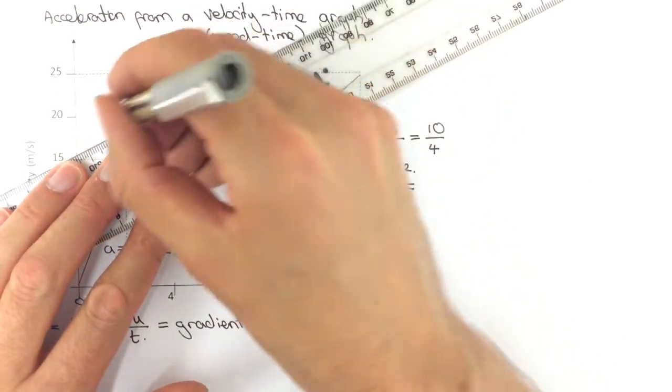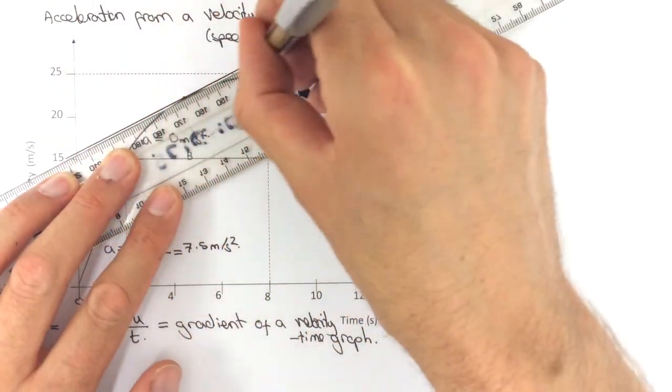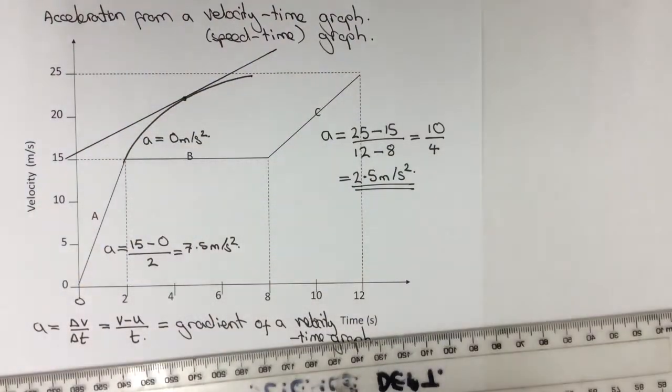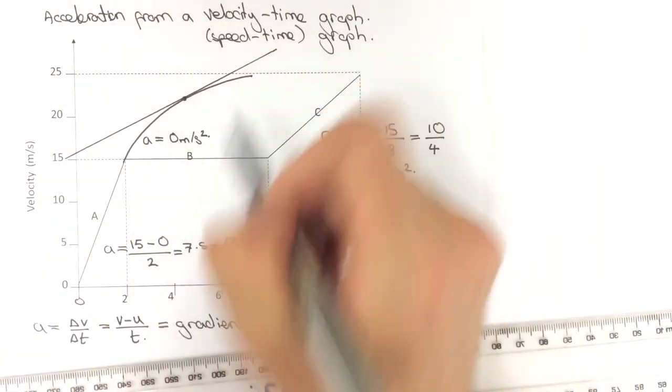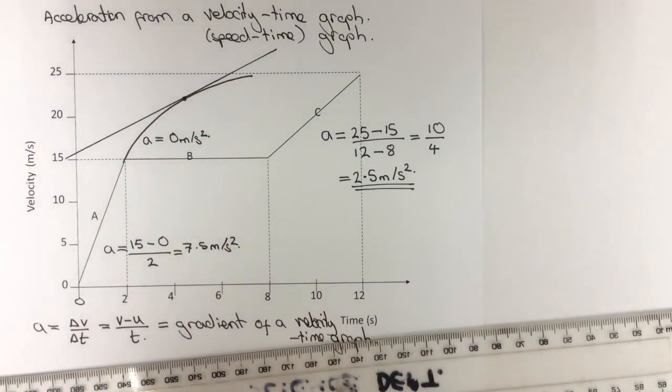which is the same method that we saw for finding the speed from a distance time graph. So if you have a curved line, you would draw in the tangent, and then once you've got the tangent, you can do the gradient of that line.